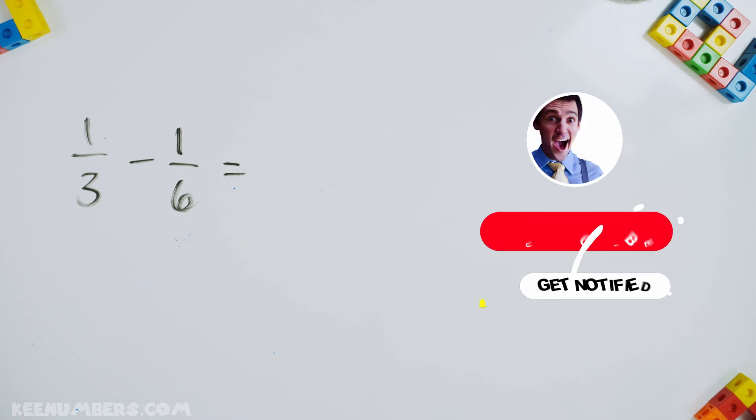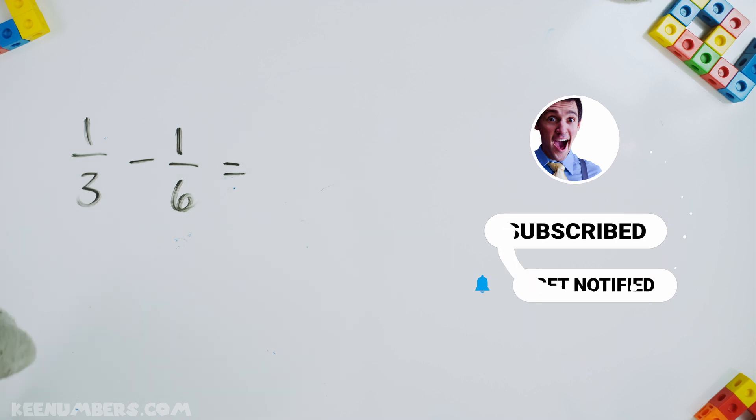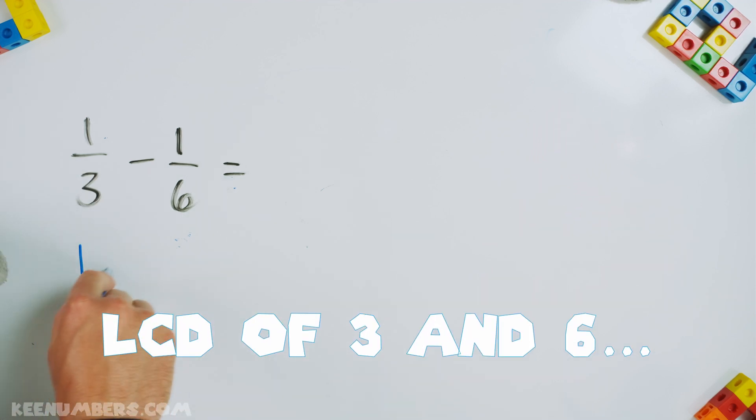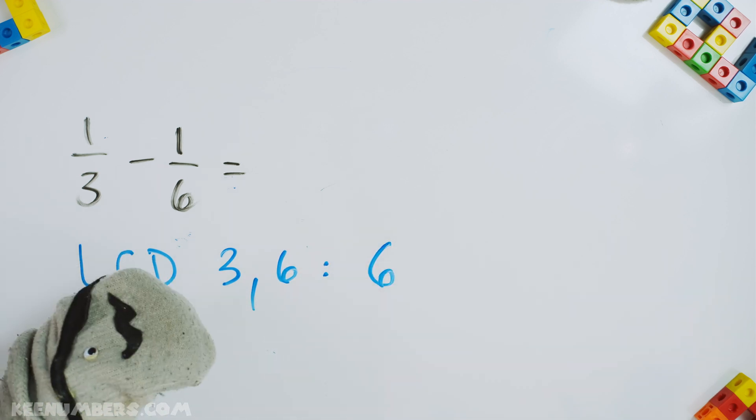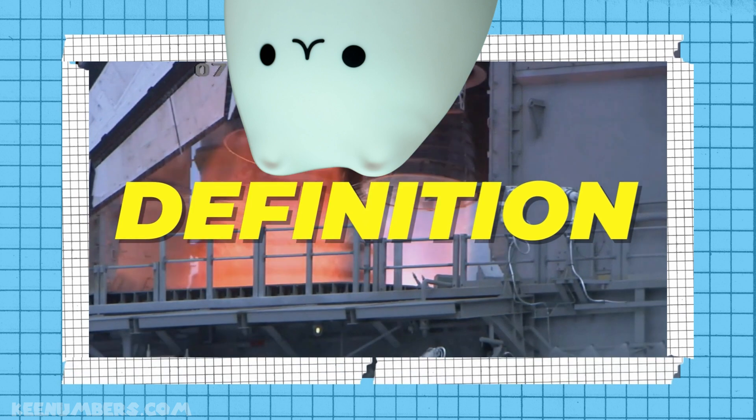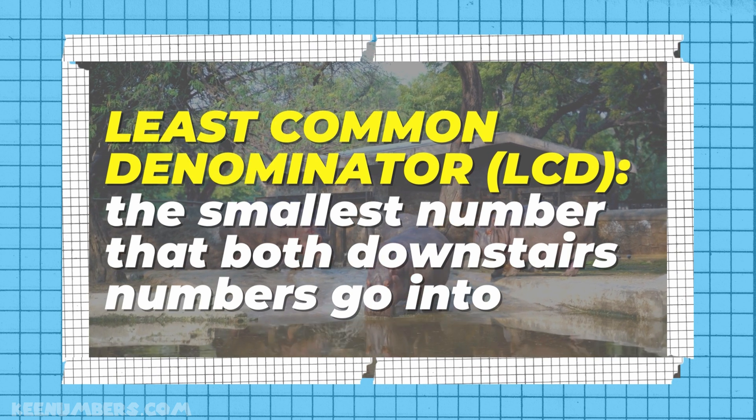One third minus one sixth. Let's do the subtraction. We've seen this before that the LCD of three, the least common denominator of three and six, is six. Very good, Pirate Sam. Have we already done this problem? No. Let's press on. LCD of three and six is six. It's the smallest number that both numbers divide into. Remember the least common denominator is the smallest number that both numbers can divide into evenly.